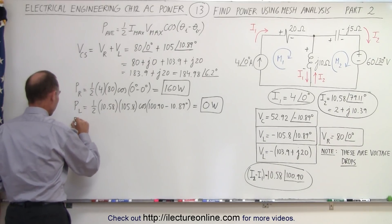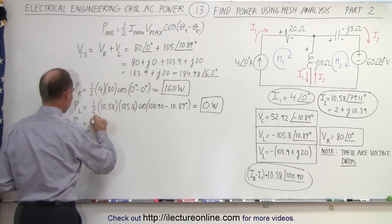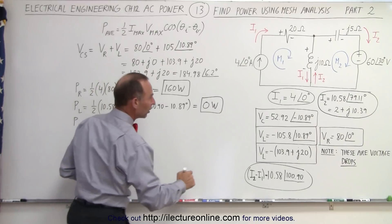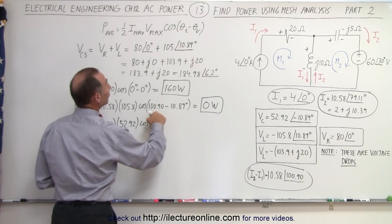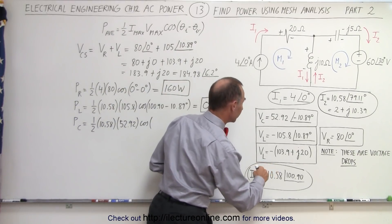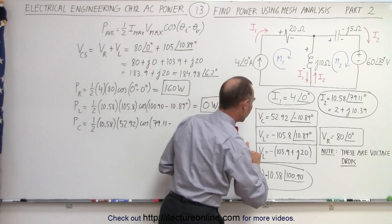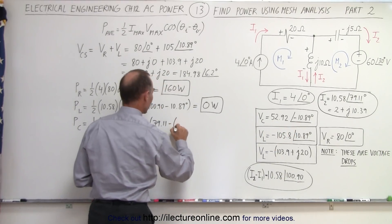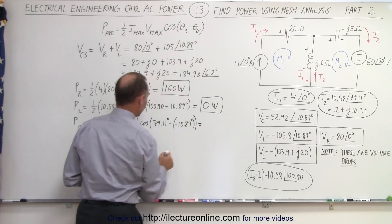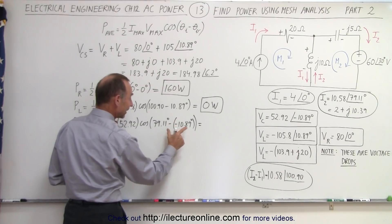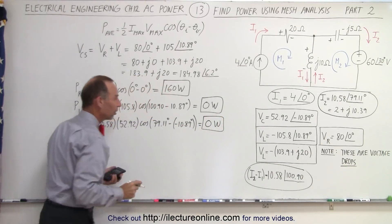We also need the power across the capacitor. That equals one-half times the current I2, which is 10.58, times the voltage of 52.92, times the cosine of the phase angle difference. The current phase angle is 79.11 degrees, minus the voltage phase angle of negative 10.89 degrees. A minus times a minus is plus, so when we add these together, we get 90 degrees. The cosine of 90 is zero, so again zero watts — no power loss across the capacitor.